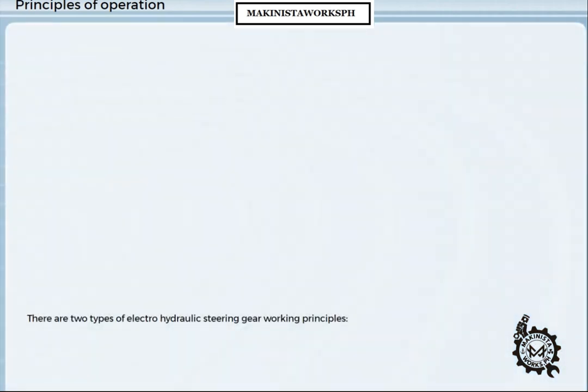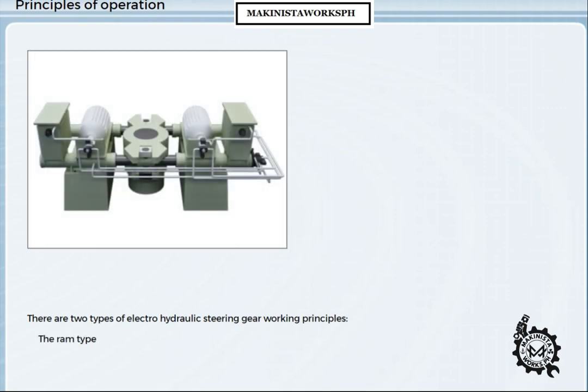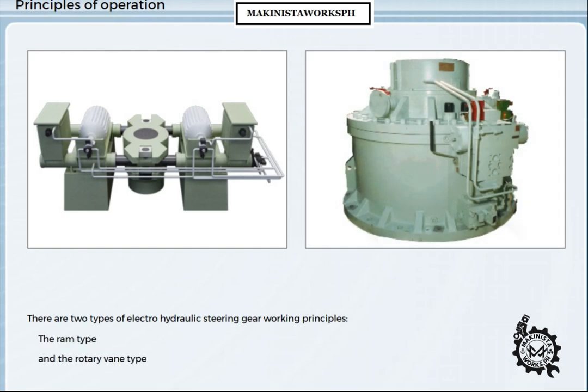There are two types of electro-hydraulic steering gear working principles: the ram type and the rotary vane type. Both types use the principle that force is pressure times area. In both types, an incompressible fluid is pumped into a chamber under pressure. The higher the pressure of the fluid, or the larger the area of the actuator, the greater the force exerted.